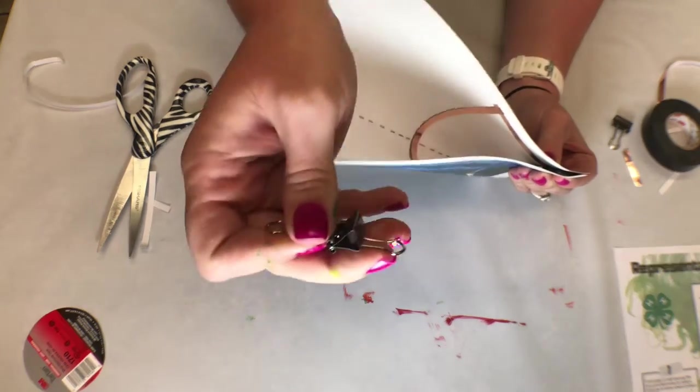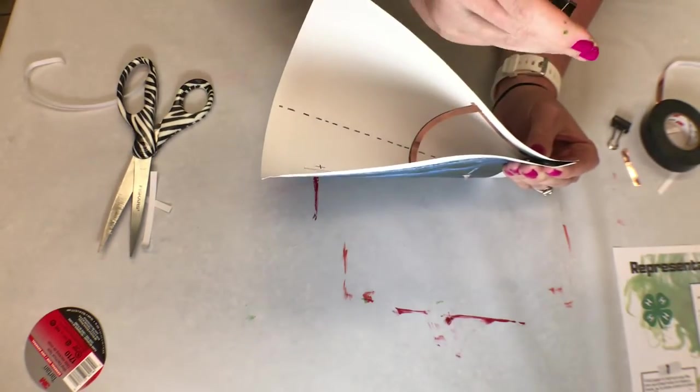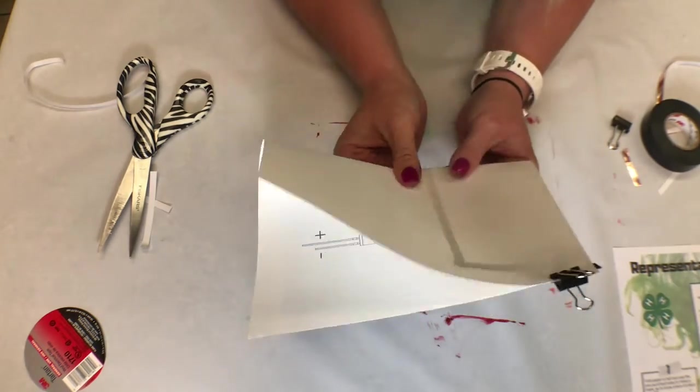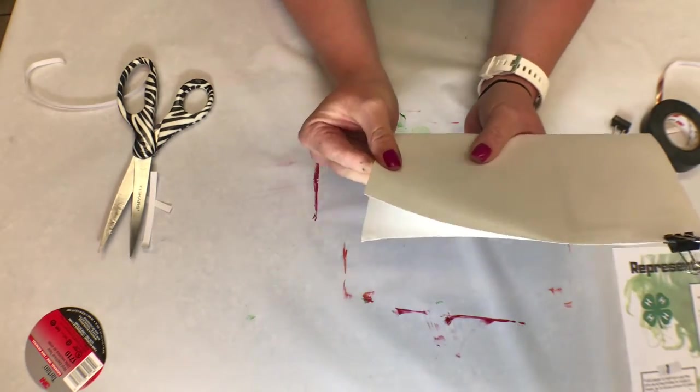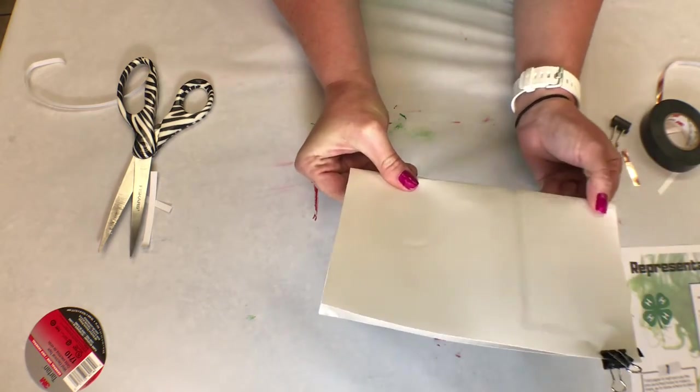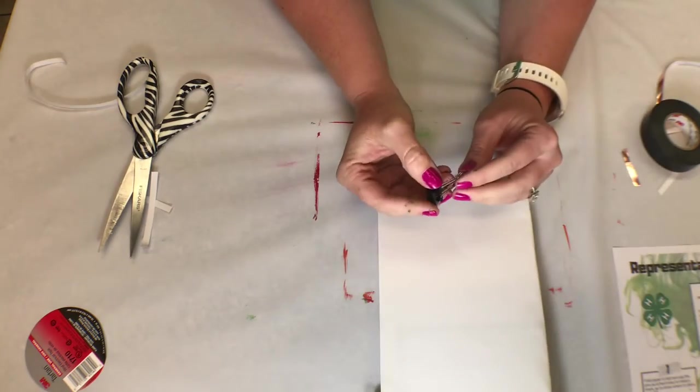These binder clips, we're going to clip it together. I'm going to continue my fold. Looks like a surprise. We're going to turn it over and see what happens.